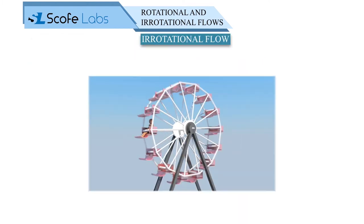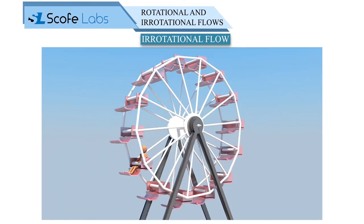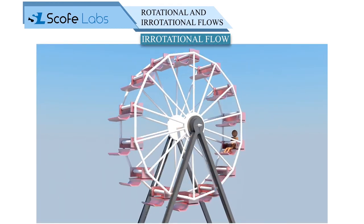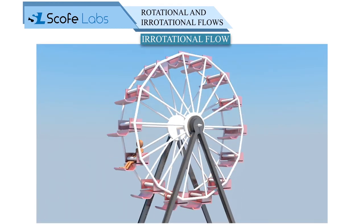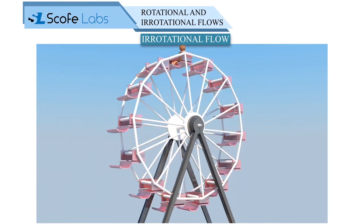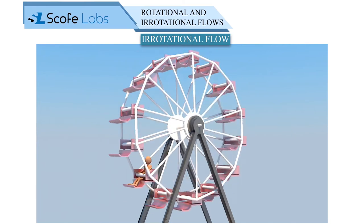Riding the ferris wheel can be considered as one of the examples of irrotational flow, in which the rider does not rotate about their own axis.